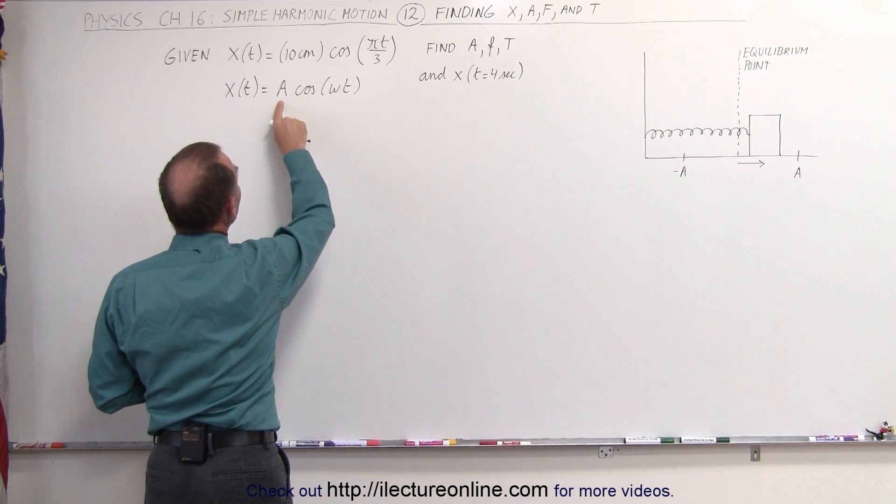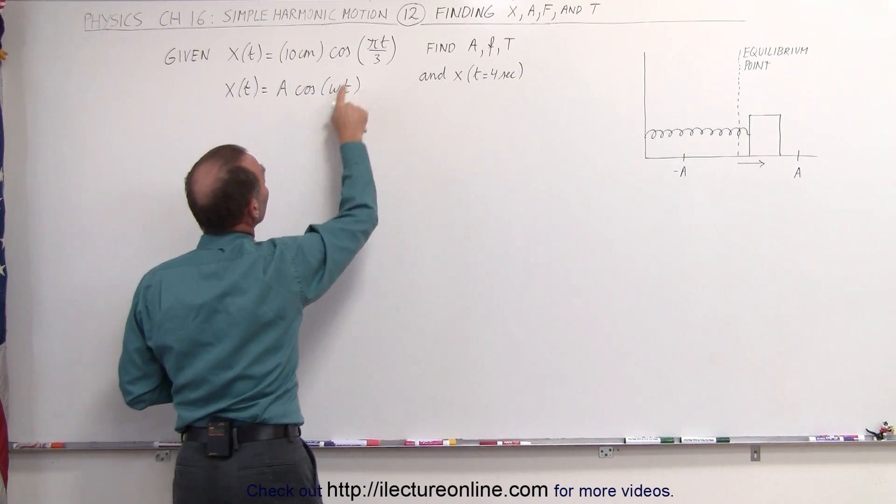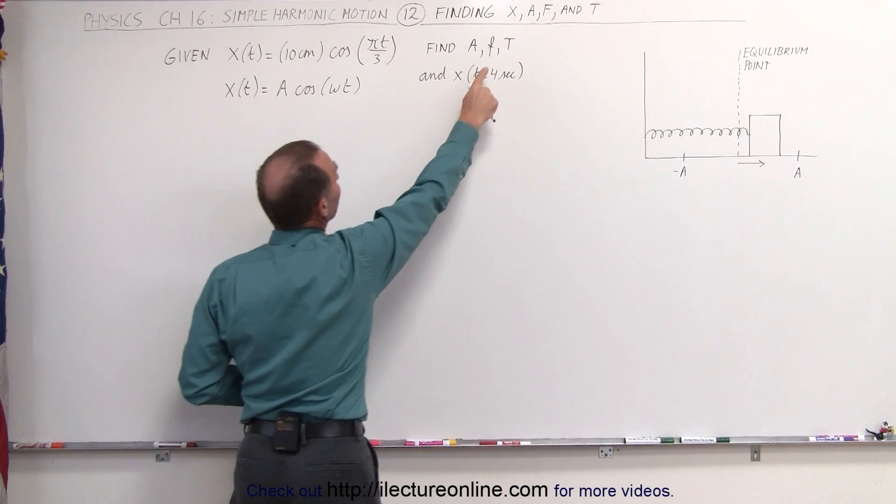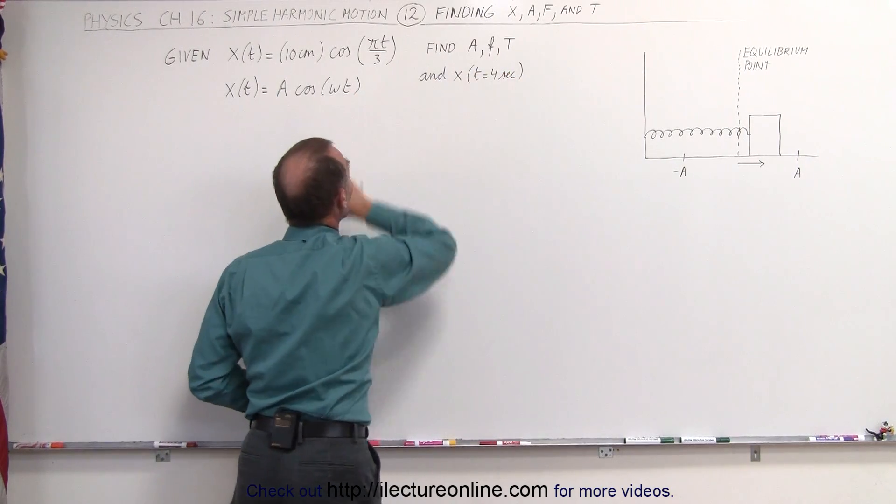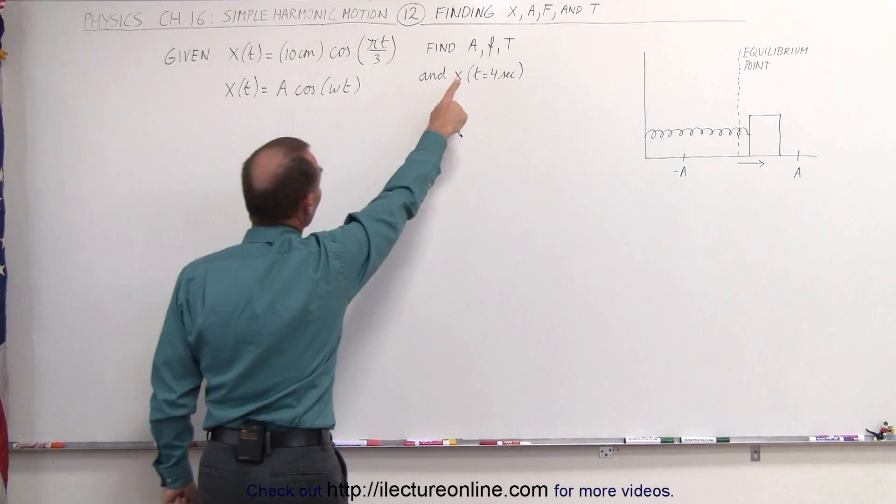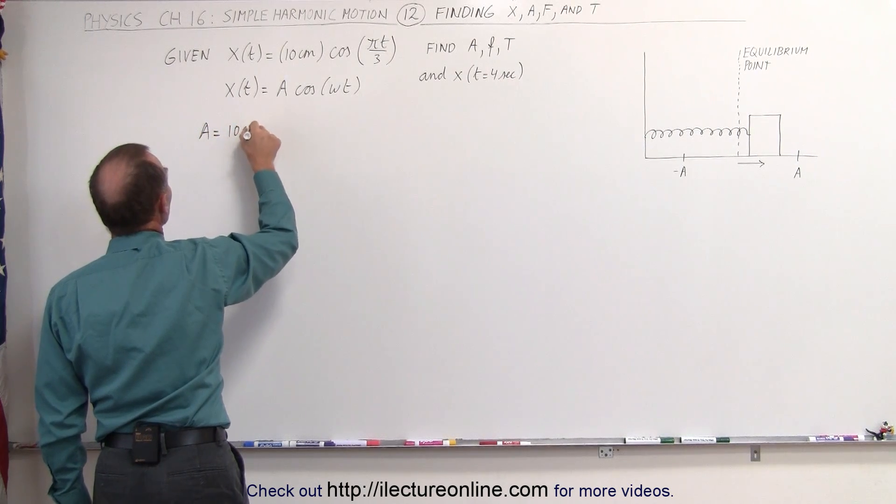Now we can see that a, the amplitude, is equal to 10 centimeters and that omega is equal to pi divided by 3. Now somehow we have to find the frequency and the period from omega and we'll do that in just a moment. So starting out with the amplitude, we can see that the amplitude is equal to 10 centimeters simply by inspection.